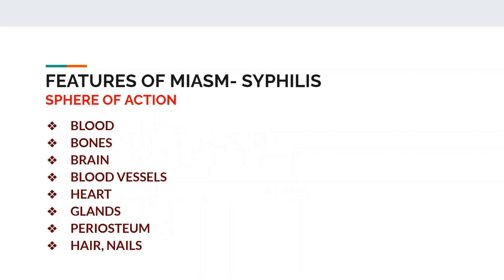The sphere of action in syphilitic miasm is on blood. The patient gets aplastic anemia, sickle cell anemia — these are of the advanced variety, not just iron deficiency anemia. Also hemolytic anemia, thalassemia, leukemia — such blood disorders are seen. Action on bones leads to destruction. Action on the brain leads to degeneration, destruction, and malignancy — advanced pathology of a syphilitic type.